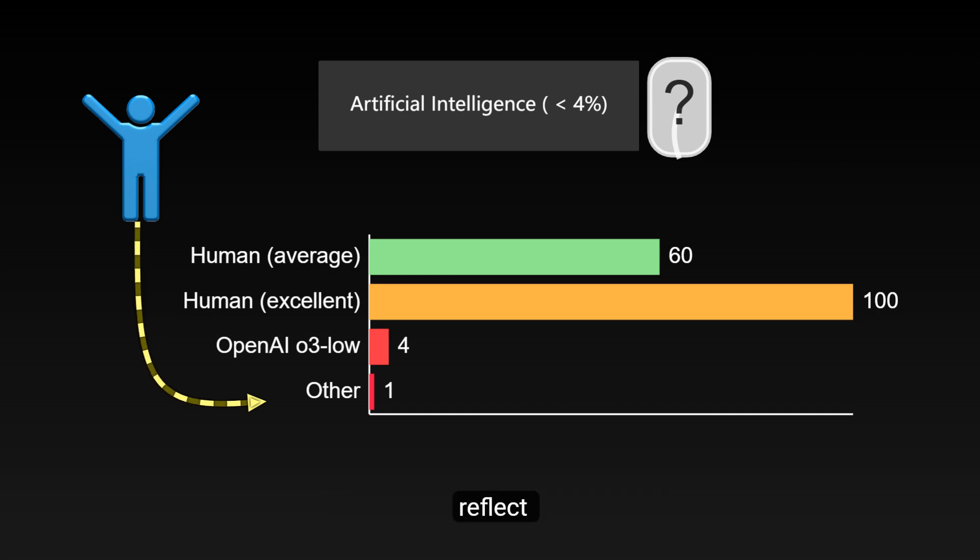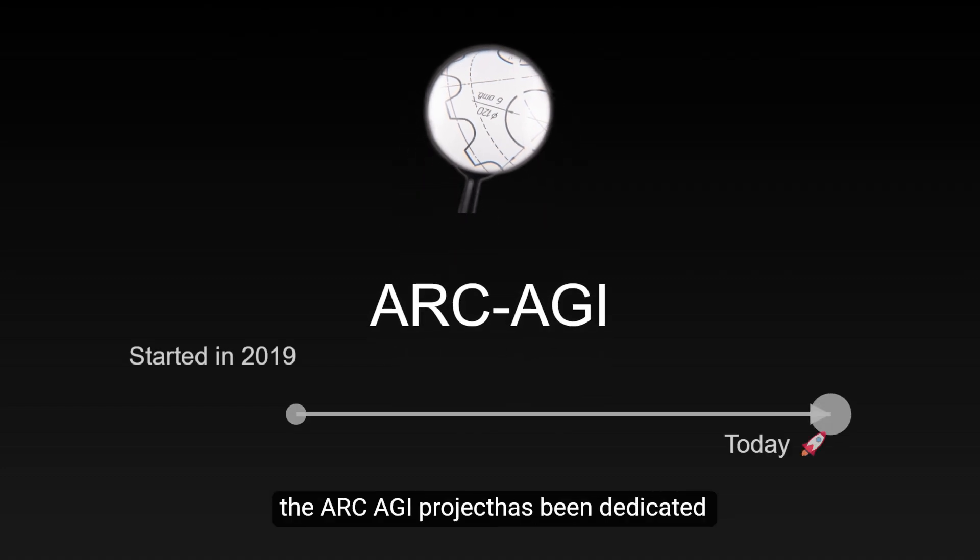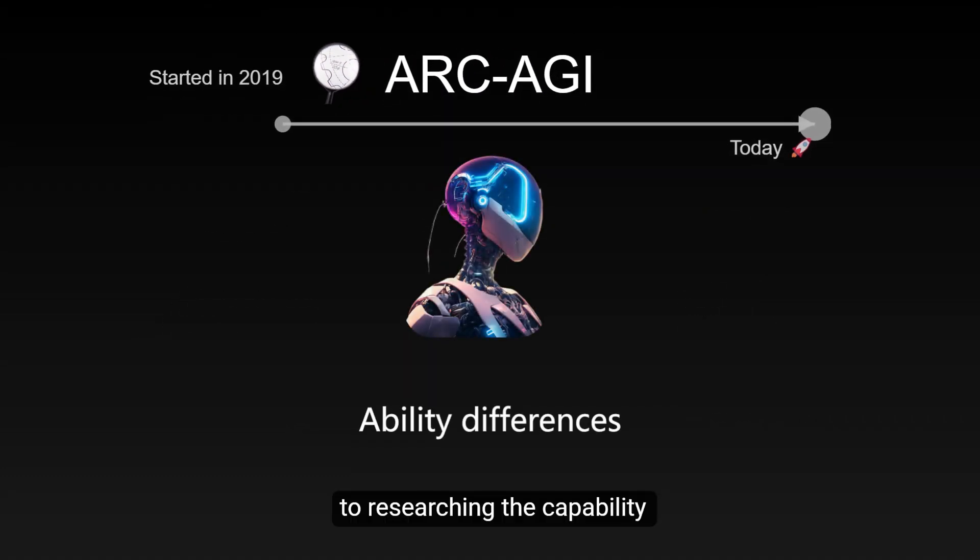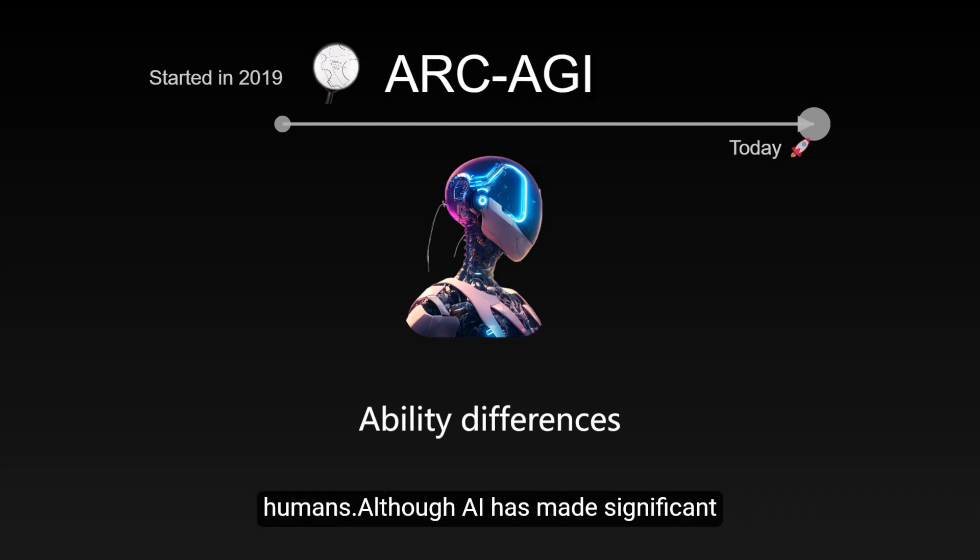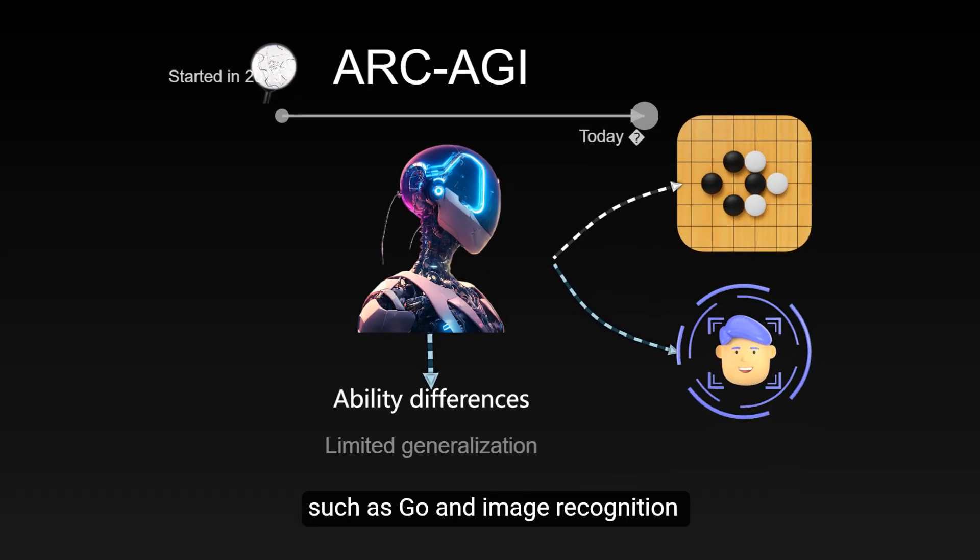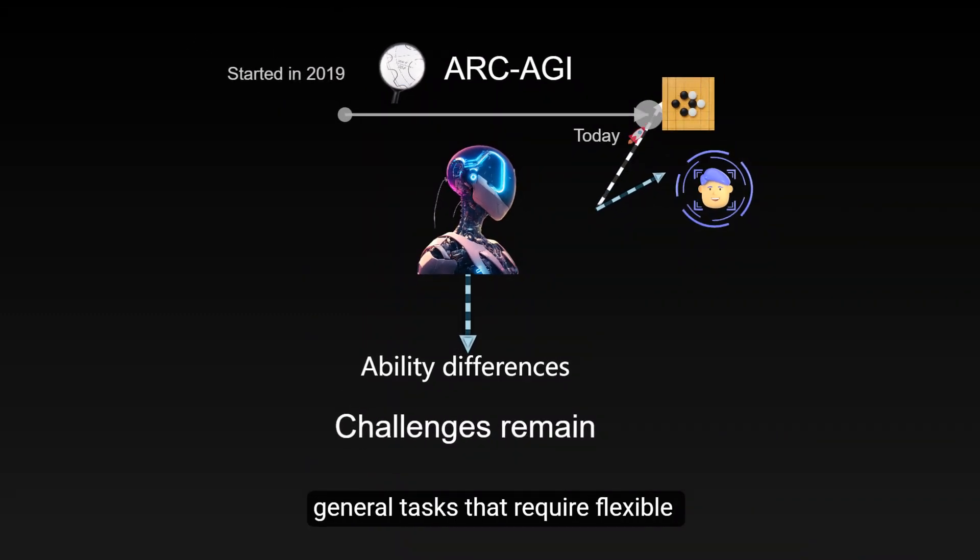What might this gap reflect? Let's first understand the background of this test. Since 2019, the ARC AGI project has been dedicated to researching the capability differences between AI and humans. Although AI has made significant progress in specific areas such as Go and image recognition in recent years, it still faces many challenges in general tasks that require flexible thinking.